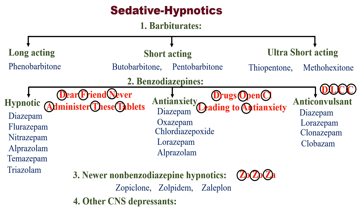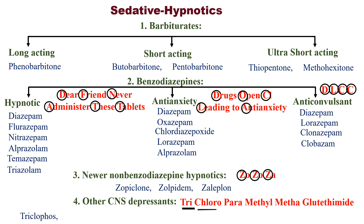The last category is other CNS depressants. There are many drugs in this category. To remember all of them, remember this one lengthy compound word: 'trichloroparamethylmethaglutethimide.' This encodes: trichlorofos, chloral hydrate, paraldehyde, methyprylon, methaqualone, and glutethimide.